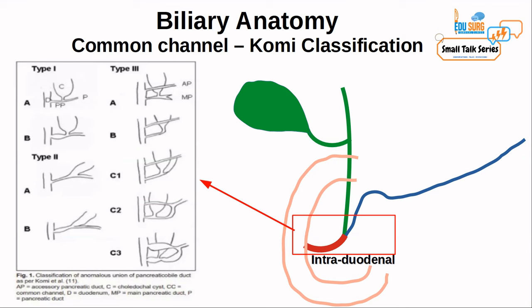Angulation of the opening of bile duct and pancreatic duct also results in variations in the common channel. When there is a choledochal cyst or dilated pancreatic duct, the Comey classification applies — commonly asked in exams. Type 1 is where the bile duct opens at a right angle to the pancreatic duct with or without pancreatic duct dilatation. Type 2 is opening at an acute angle with a choledochal cyst. Type 3 is pancreas divisum or absent pancreatic duct with choledochal cyst. The Comey classification is very important for operating on choledochal cysts.